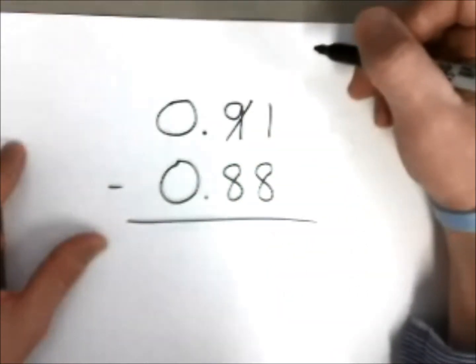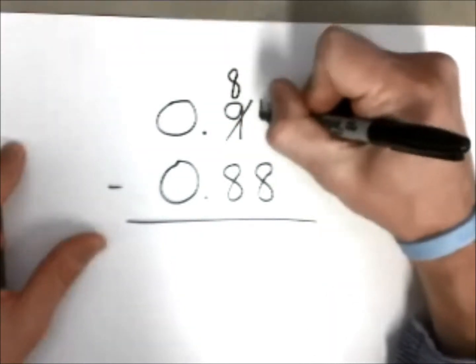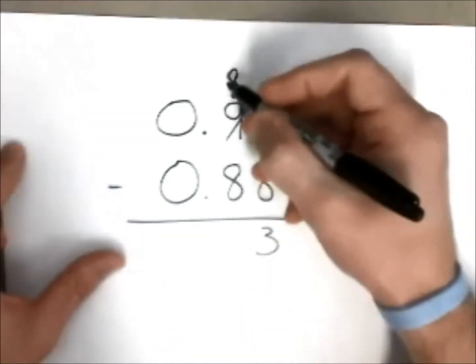So we need to go next door, and we used to call this borrow, but in this new series we call it ungroup. Same sort of thing. So we're going to change this or convert that into an eight, bring that one over here, and eleven take away eight is going to give you three.